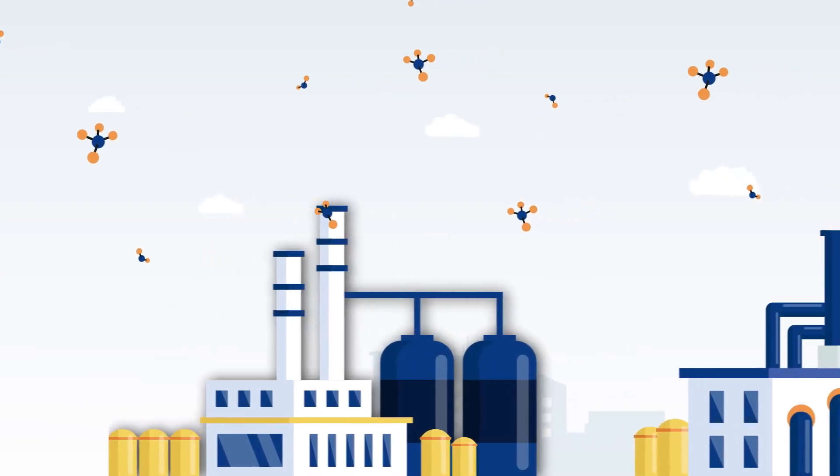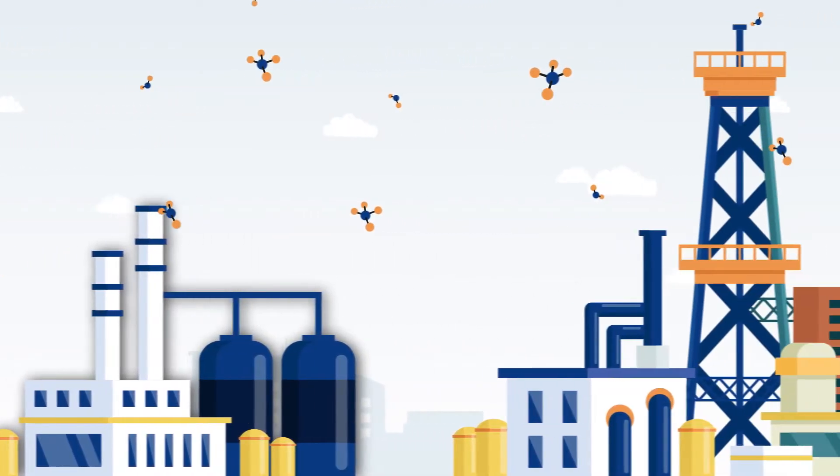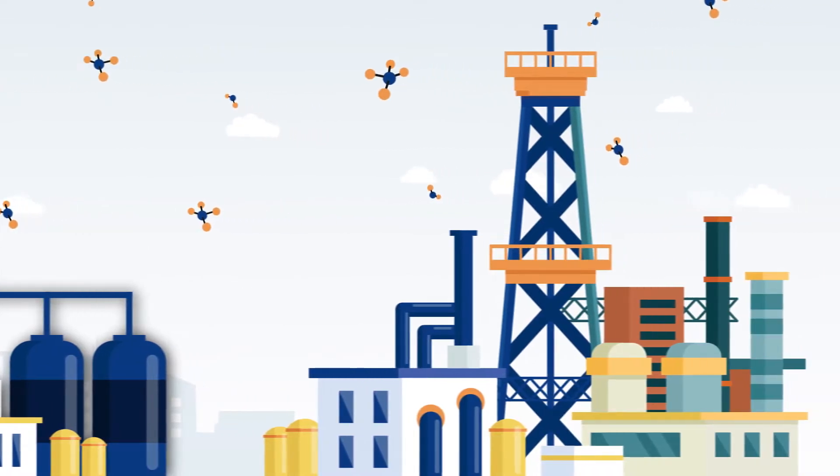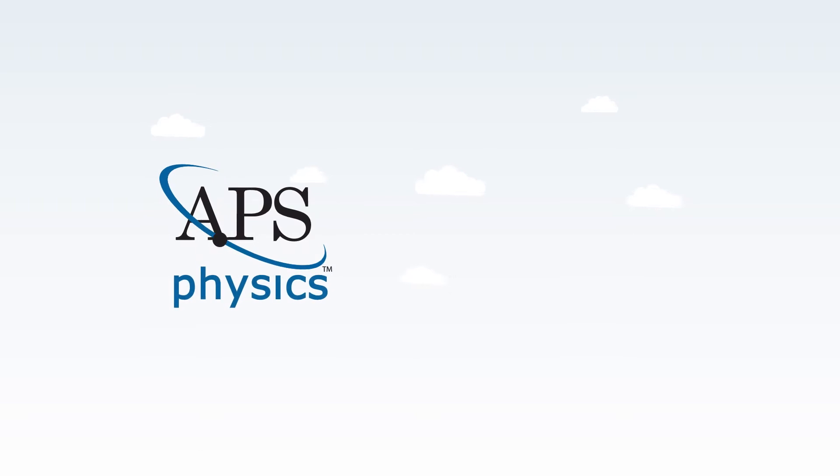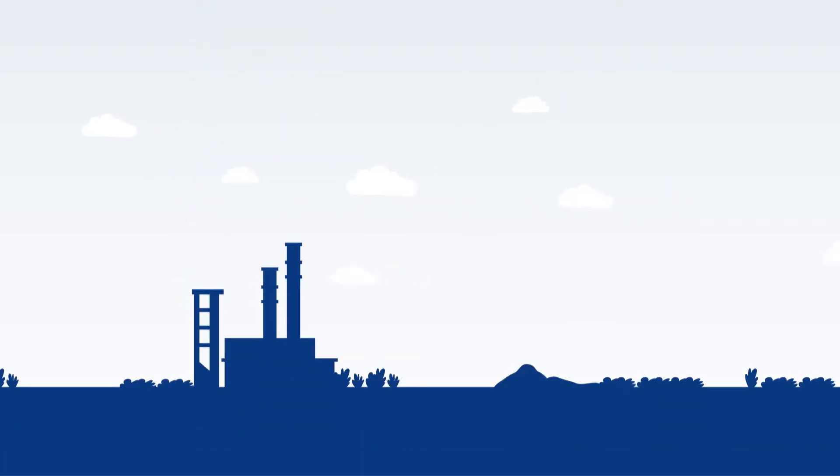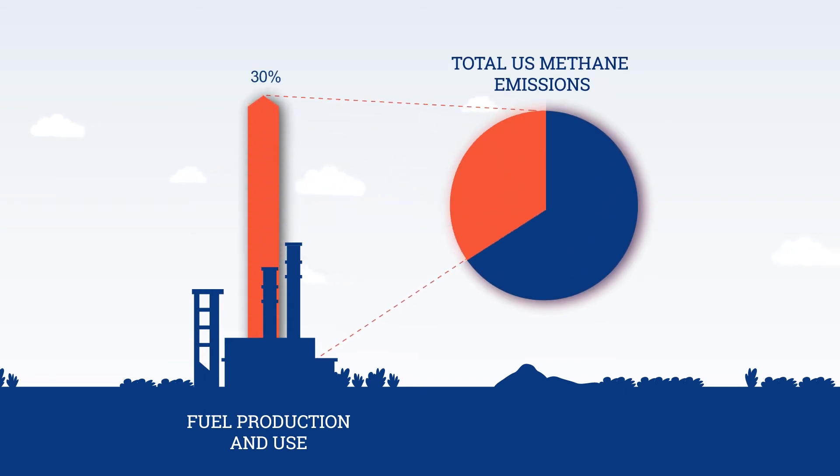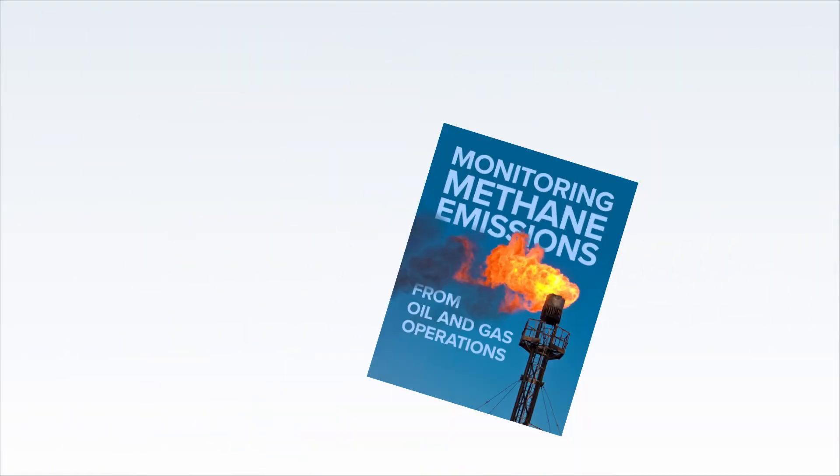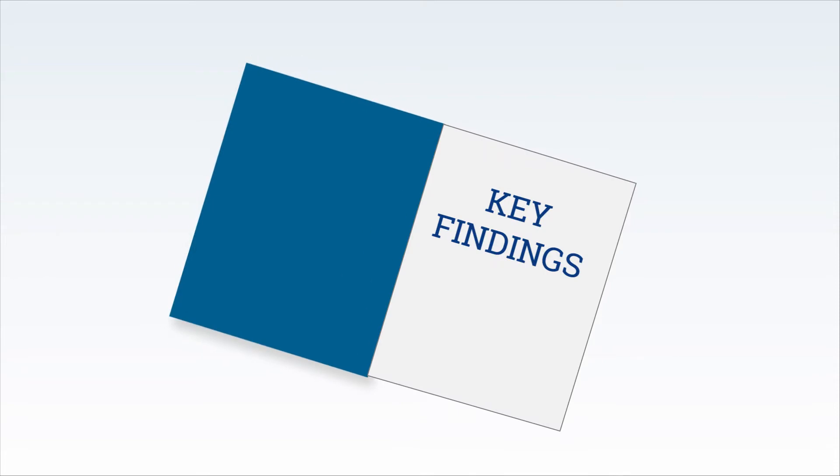Methane is the second most abundant greenhouse gas created by human activities and a major driver of climate change. This is why the American Physical Society and Optica partnered on a study focused on monitoring methane emissions from the U.S. oil and gas sector. Let's take a closer look at some of the study's key findings.